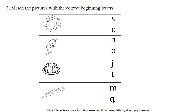The second picture is a parrot. Find the beginning letter of 'parrot' and match it. This is a picture of a jelly. Find the beginning letter and match it. The last picture is a quill. Find the first letter of 'quill' and match it. I know you can do this correctly.